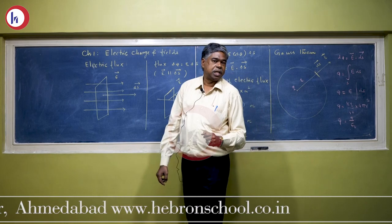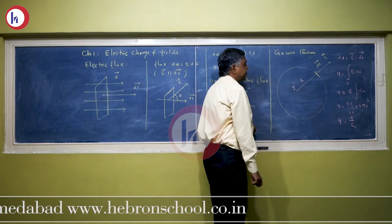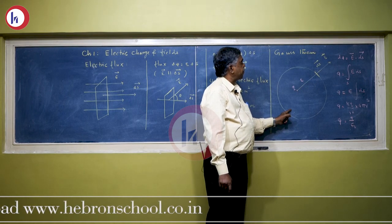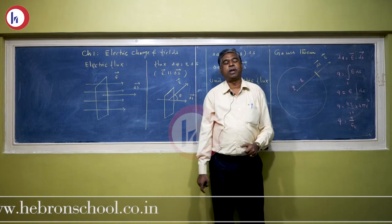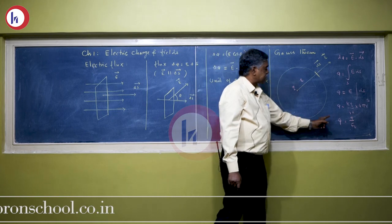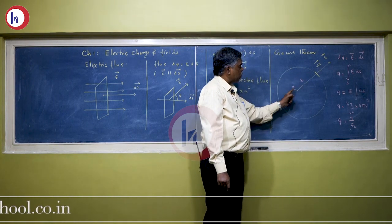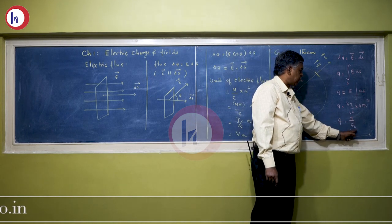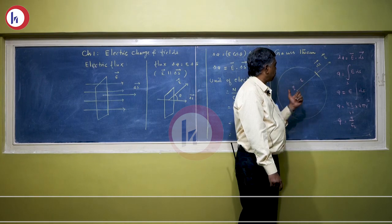So what is the meaning of this equation? The equation phi equals q upon epsilon 0 is known as Gauss theorem. It states that if any Gaussian surface encloses a charge q, then the total flux linked with that Gaussian surface is equal to q times 1 upon epsilon 0. Using Gauss theorem, you can find the electric field at any point due to various charge distributions.